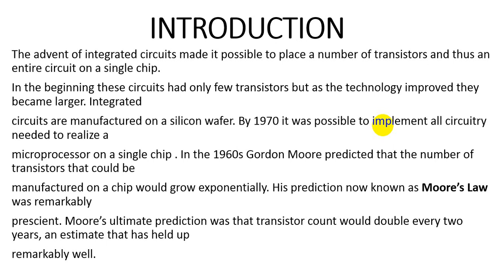In 1960, Gordon Moore predicted that the number of transistors that could be manufactured on a chip would grow exponentially. His prediction, now known as Moore's Law, was remarkably prescient. Moore's ultimate prediction was that transistor count would double every two years, and that has held up remarkably well.